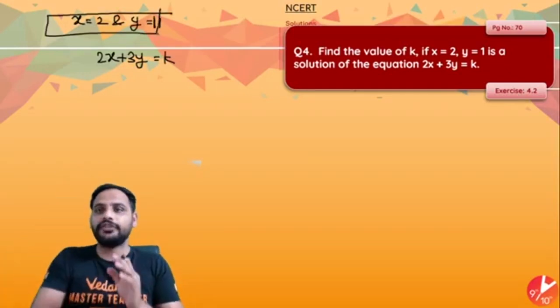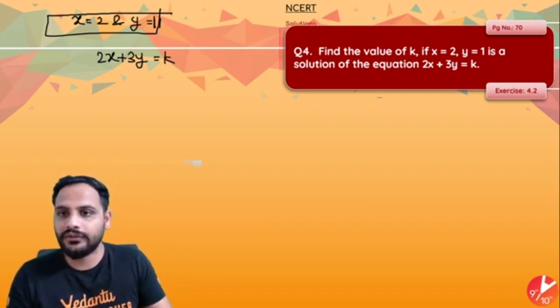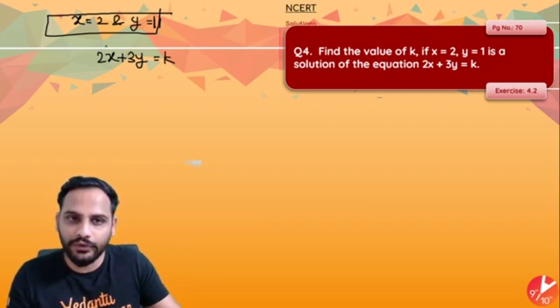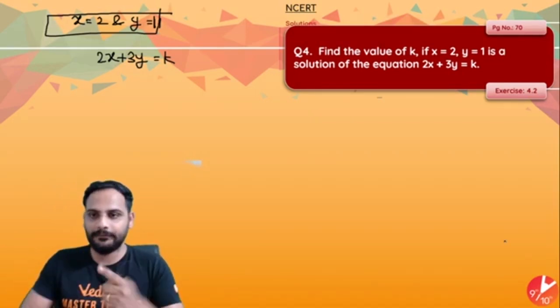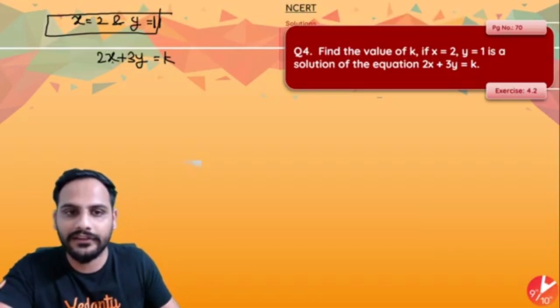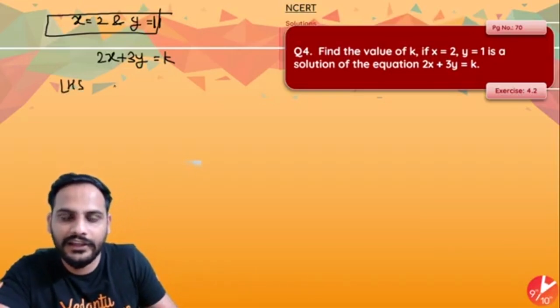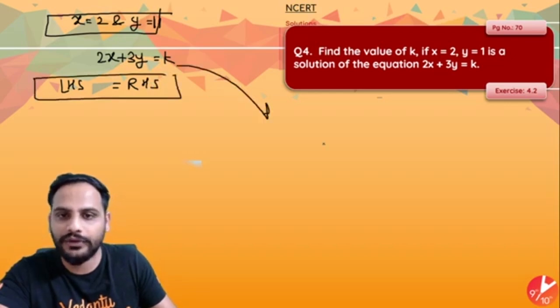So what I will say, I will put x is equal to 2, y is equal to 1 in this and it should satisfy the equation. LHS should be made equal to RHS. So let us look at LHS equal to RHS. We know if it is a solution, so put it over here, satisfy this.